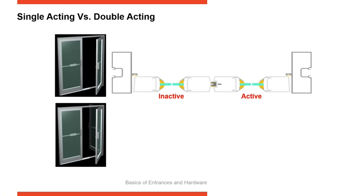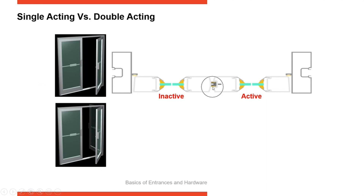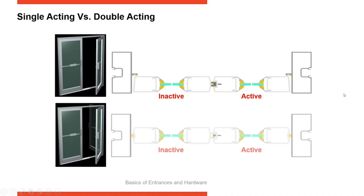Here you can see a single acting door. You can see right here there is a door stop that the door is compressed up against. With a single acting door, it is all set to the exterior — you can see we're toward the front of the frame. When the door closes, it compresses against the door stop, and there's a gasket that helps maintain the air and water seal between the door and the frame. At the meeting between the doors is an adjustable astragal to close off the air gap.